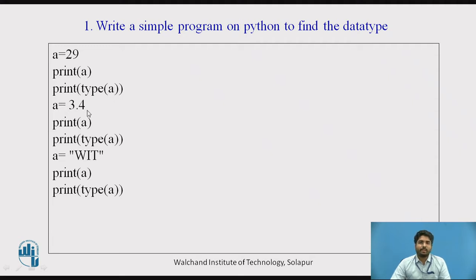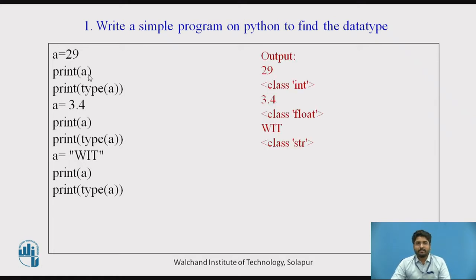For a equal to 3.4, then print a and print type(a) — this is float. And a equal to 'wit', print a, print the output and also show the data type of a. So the output would be: for the first case it shows 29 and the class is integer. For 3.4, the class is float. And for 'wit', the output is 'wit' and the class is string.